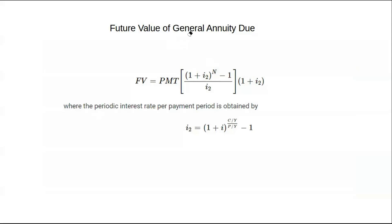For general annuity due, the compounding period and payment period don't coincide. You again need to calculate I₂ first using its formula, then substitute into the general annuity due formula. The formula for I₂ here is very similar to the one used for ordinary general annuity.